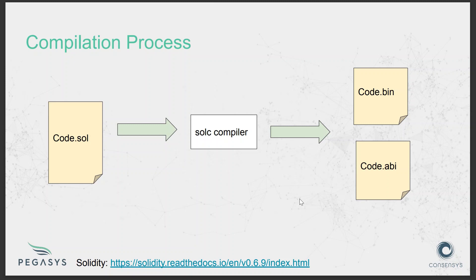Whenever we write code in Solidity, we have a file with the .sol extension. We compile it — most of us have used Remix as a compiler — and after compiling we get the bytecode and the ABI. The ABI, or Application Binary Interface, is just an interface that defines the smart contract: all the functions, their arguments, and return values.